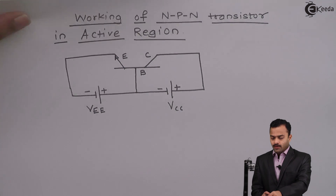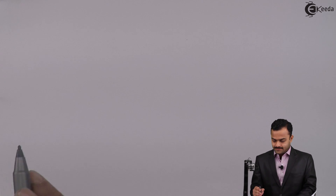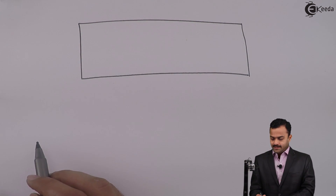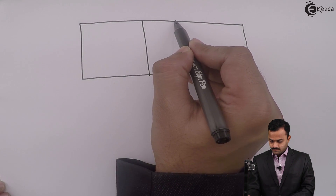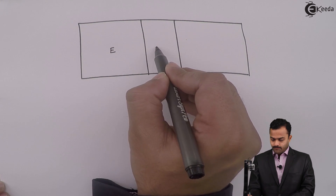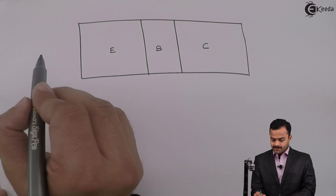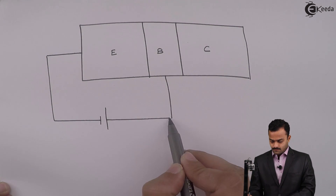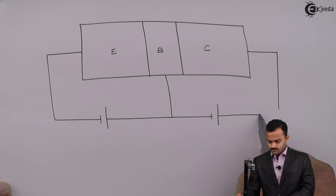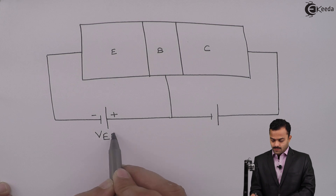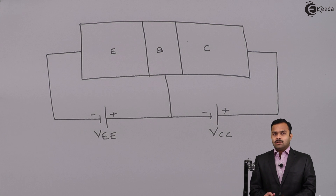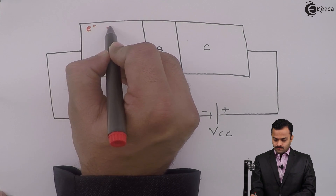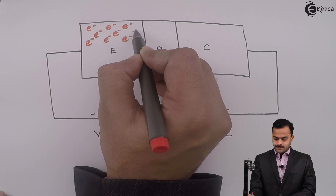Let's draw a layer diagram of the NPN transistor. This is the emitter region, base region, and collector region, with external supplies applied accordingly — this is VEE and this is VCC. As we know, the emitter is heavily doped, so it has electrons as majority charge carriers.